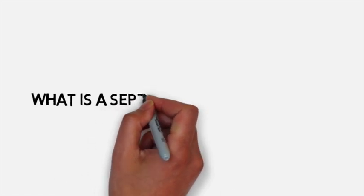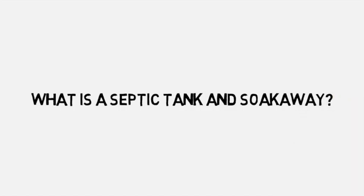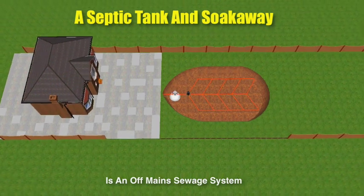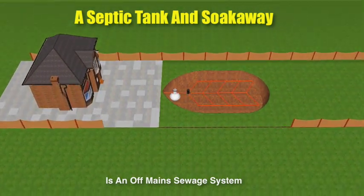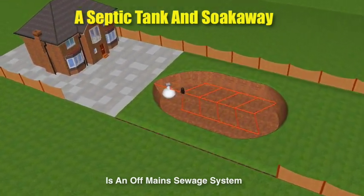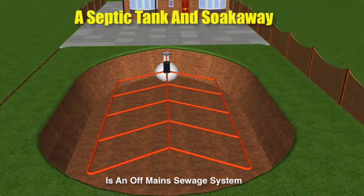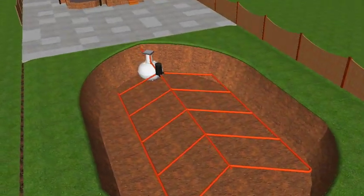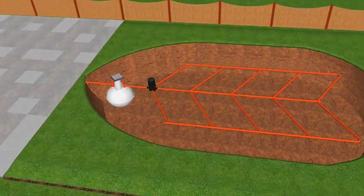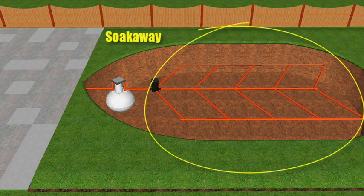So, what is a septic tank and soak away? A septic tank and soak away is an off-main sewage system, designed for properties that are not connected to the mains drainage. This kind of sewage system normally comprises of two main components: number one, the septic tank, and number two, the soak away.